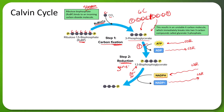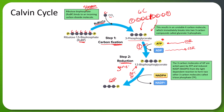So in step 2, the reduction phase, ATP and NADPH — both made in the light-dependent reactions — come to the stroma, where a phosphate, two electrons, and a hydrogen ion are added to 3-phosphoglycerate, turning that 3-carbon compound into another 3-carbon compound called G3P, glyceraldehyde 3-phosphate. To summarize: the 3-carbon molecules are acted on by ATP and reduced NADP (NADPH) from the light-dependent reactions to form two other 3-carbon molecules called triose phosphate, or TP — another name for G3P, which is a reduced form of the phosphoglycerate.